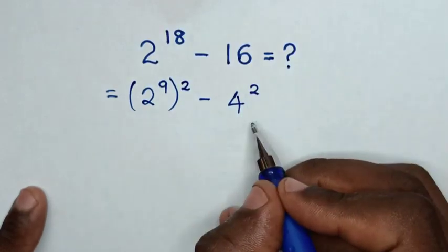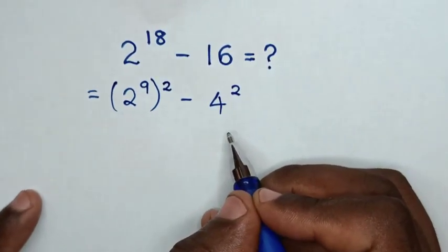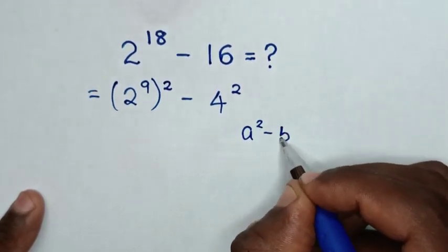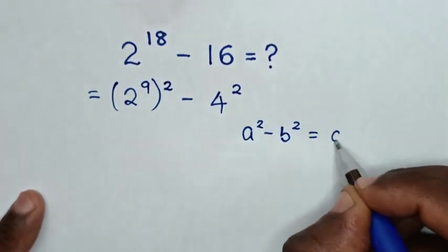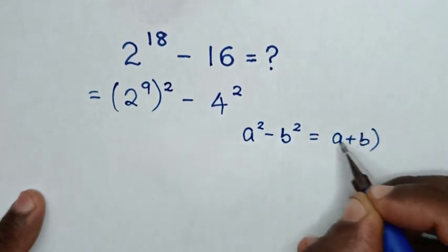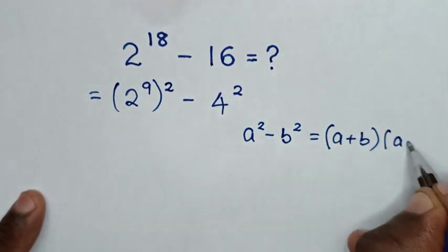Now this expression is in the form of a difference of squares. We'll apply the rule a^2 minus b^2 equals (a + b)(a - b).